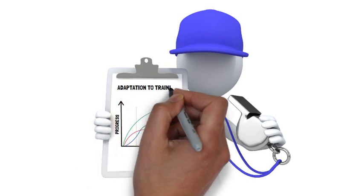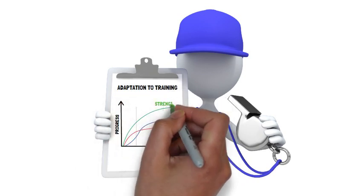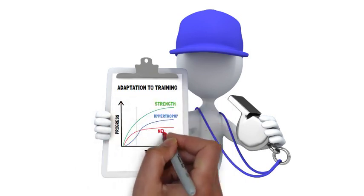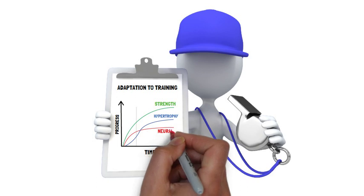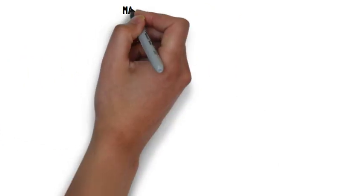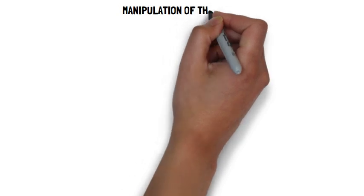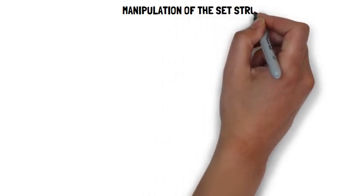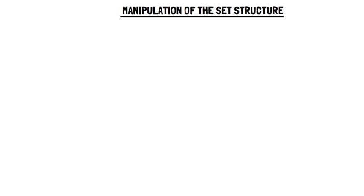To ensure continued adaptations to training, variation is essential. A type of training variation that is often overlooked but is now becoming more commonly used is the manipulation of the set structure. In general, there are two types of set structures, which are a traditional set and a cluster set.